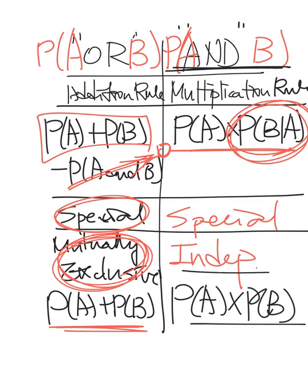So let me go back to the table. It was the general multiplication rule. But now the special one: the conditional probability B given A will be just probability of B. So the probability of A and B will be probability of A times probability of B — when they are independent — because the conditional probability reduces to just B.